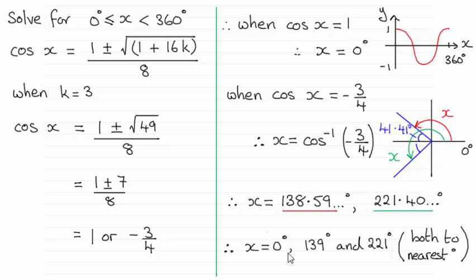And as you can see, there are three solutions. One of them is exactly 0 degrees, and the other two to the nearest degree are 139 degrees and 221 degrees.